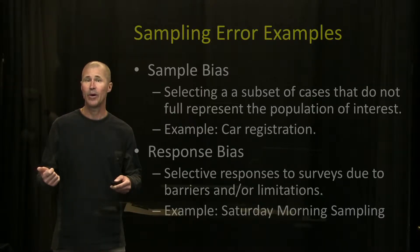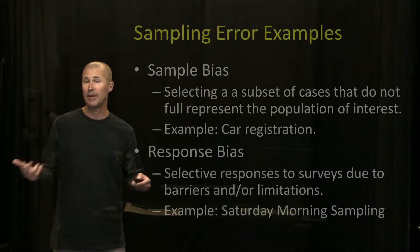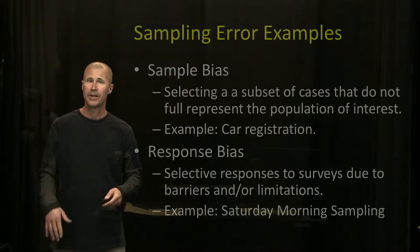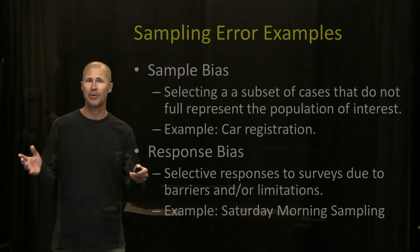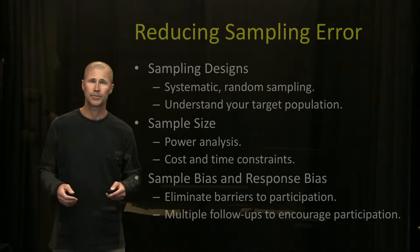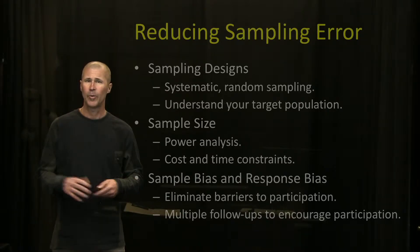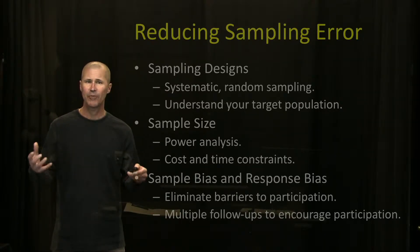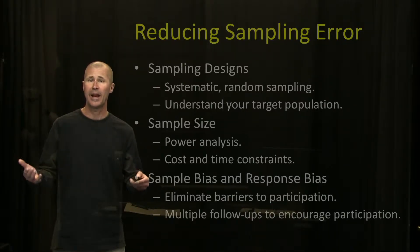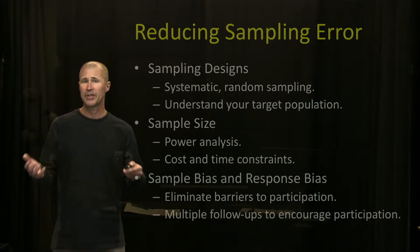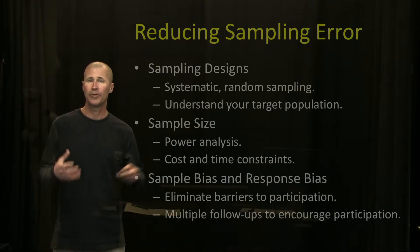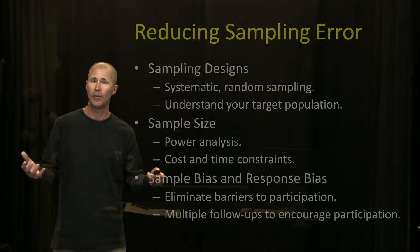You'd be better off calling on Saturday morning, Tuesday afternoon, and maybe Thursday evening to try to capture everyone. These are examples of sample bias and response bias that contribute to sampling error. The ways we reduce sampling error are through really strong, systematic random sampling designs and by understanding our target population and their behaviors. Sample size is another way to reduce sampling error — in general, the larger your sample size, the more reflective that sample will be of the overall population.